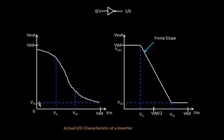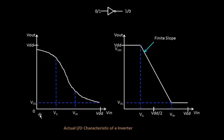When the input voltage is above VIH, the output is expected to be close to VOL. VOL must be below VIL, because this output connects to the input of another inverter or logic gate, and that input must lie in the range 0 to VIL to be detected as logic 0. So VOL must be less than VIL.